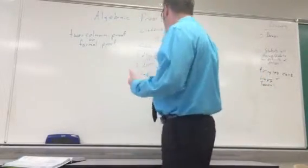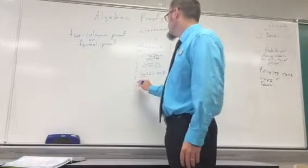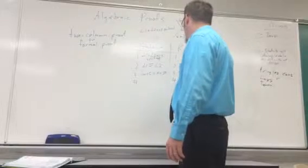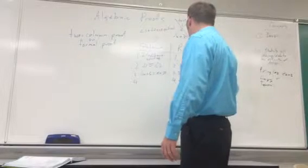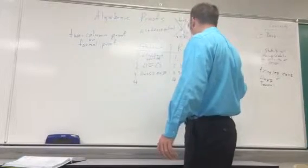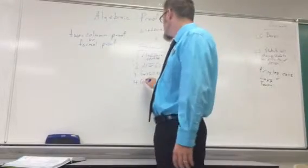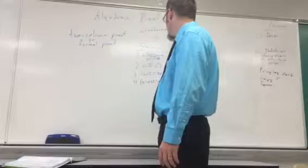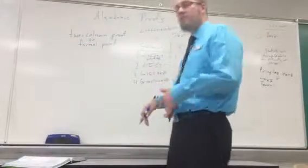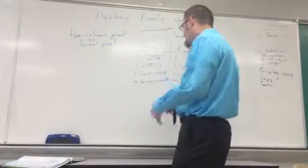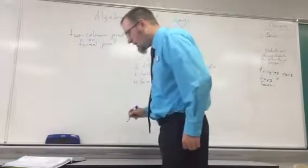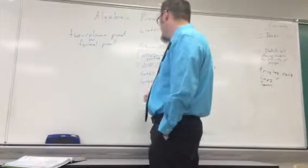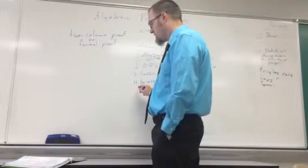We use the subtraction property and write out this step: 6x minus x plus 5 is equal to x minus x plus 30. As long as we do the same thing on both sides of the equal sign, it works out fine. Then we write the result of that on our next step.